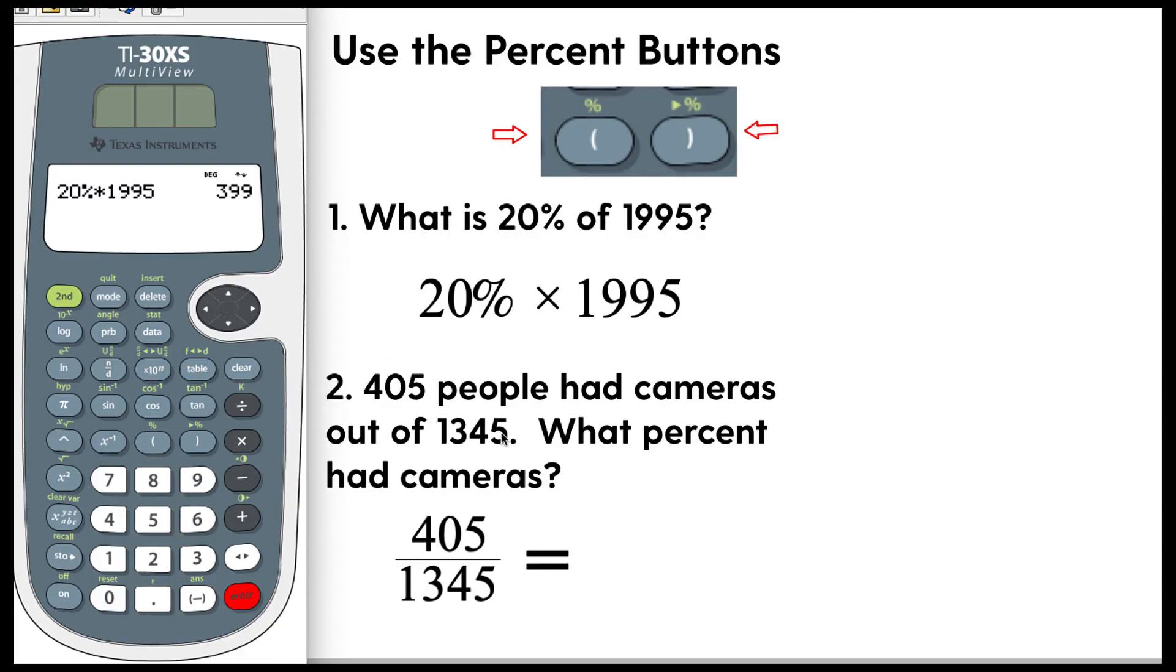All right let's say though that we have the second problem down here. We have 405 people had cameras out of 1345, what percent had cameras? So you could set this up, hopefully you see this could be set up as a fraction and then you can convert this straight into a percentage using the fraction button. So watch this, you do n over d and we're going to do 405 in the numerator or on top, in the denominator on the bottom we're going to put 1345 and now here is where we're going to put this convert to percentage. So second and then this kind of arrow percent and you'll see you got kind of an arrow and a percent and it will kick this out to roughly 30 percent and it already has converted it for you which is where many students make their mistakes. So don't forget these percent buttons and convert to percent.